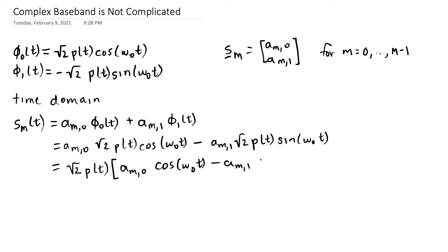Here I simplified by pulling the square root of 2 and the p(t) out and I'm going to remind you of some terms that you've learned.